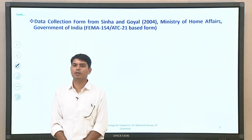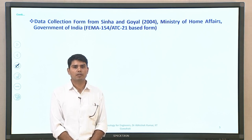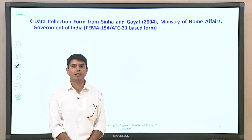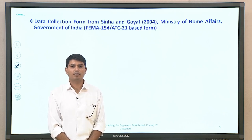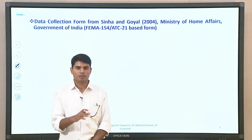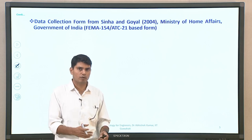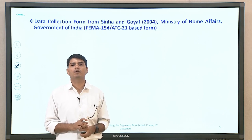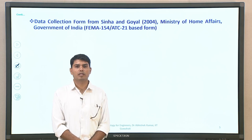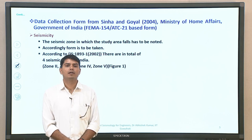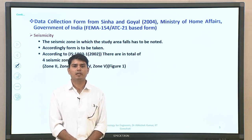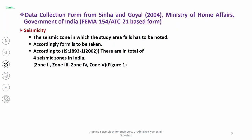For data collection, I have referred to documents on the Ministry of Home Affairs web page, referring to forms generated by Sinha and Goyal (2004), which are themselves based on FEMA 154 and ATC-21. That was the basic guideline for performing vulnerability studies for a particular building, as referenced by the Ministry of Home Affairs, Government of India. This particular form can also be downloaded from that website.